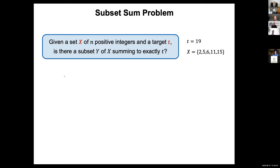You all know the subset sum problem: given a set X of n positive integers and a given target t, we want to know whether some subset of X sums to t. In this example, yes, there exists a subset that sums to the target of 19. Throughout the talk I will assume that X is really a set, not a multi-set — mostly to simplify asymptotic notation so that n is at most t.